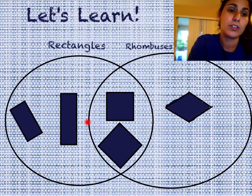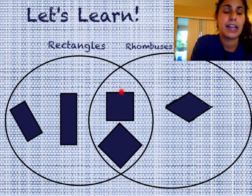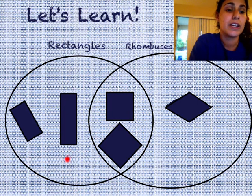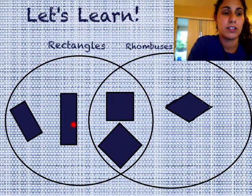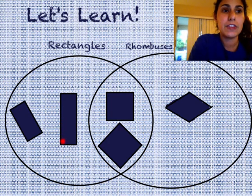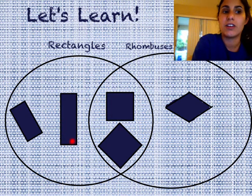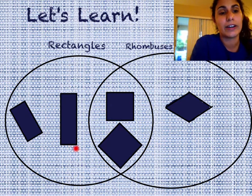These can be a rectangle because they have four right angles. And even though the sides are all equal, they don't have to be equal. These are rectangles because they have four right angles and they have parallel sides, even though they don't have all equal sides like the square and the rhombus do.